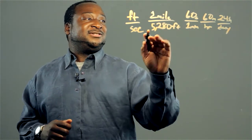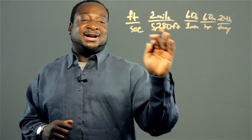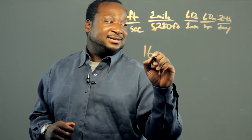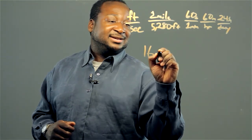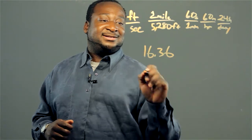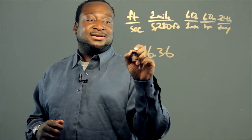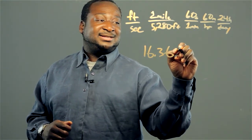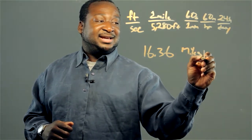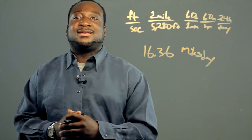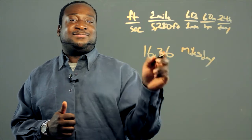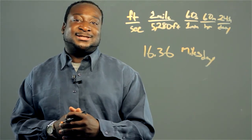When you multiply this fraction out you get approximately 16.36 — round it off. So that's miles per day. So we know that one foot per second equals 16.36 miles per day.